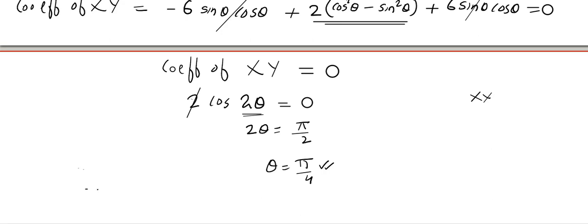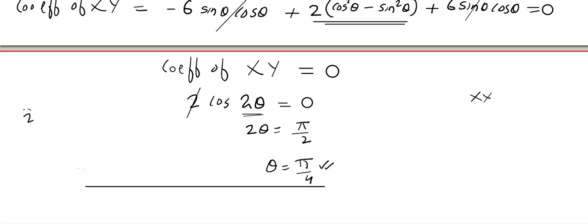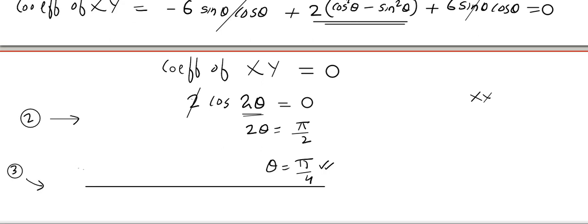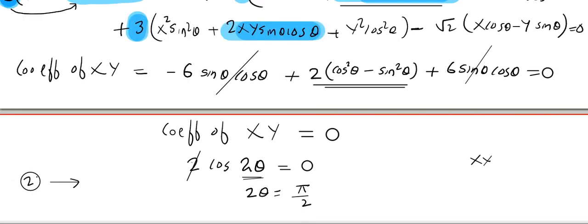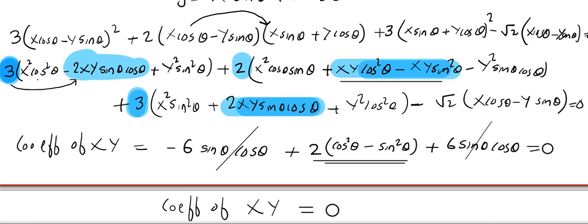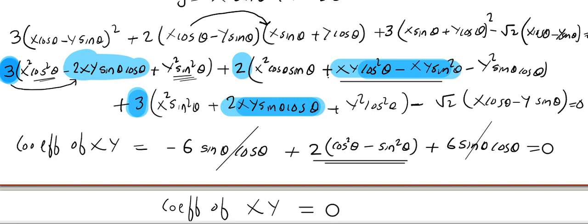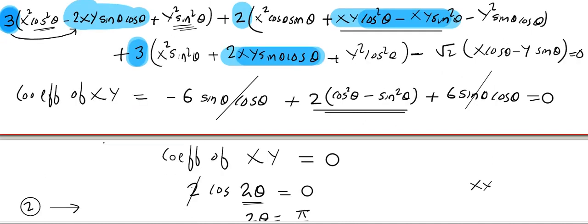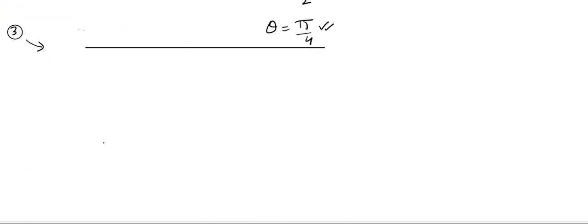You get 2 marks for finding θ. For the remaining 3 marks — the transformed equation — plug in θ = 45° into the expanded equation and ignore the blue-colored XY terms. You can do that part and someone please put the answer in the comment section.